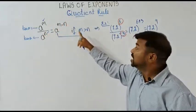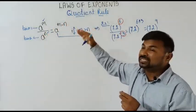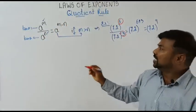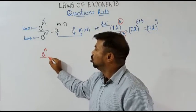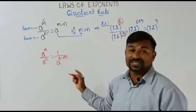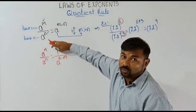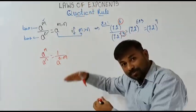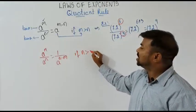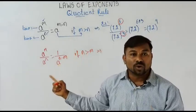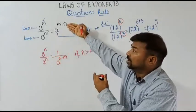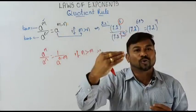So this is the formula: a to the power m by a to the power n equals a to the power m minus n, if m is greater than n. Always the smaller should reach the bigger one. Now the same formula in another form: a to the power m divided by a to the power n equals 1 by a to the power n minus m. This formula is applicable if n is greater than m — if n is bigger, the top one comes down.